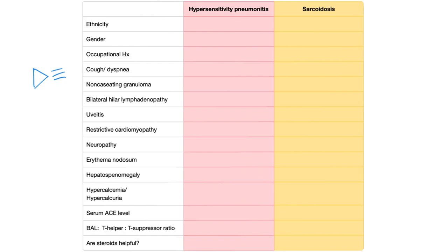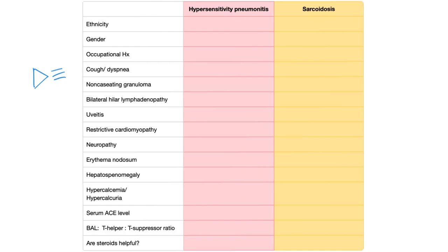In a previous video in this playlist, I compared hypersensitivity pneumonitis and sarcoidosis — please watch that video. If you've already watched it, try to fill in the blanks to train your mind, because memory is like a muscle. You have to exercise it — if you want a better memory, use your memory.